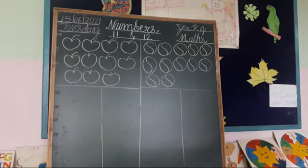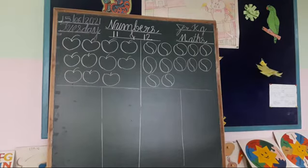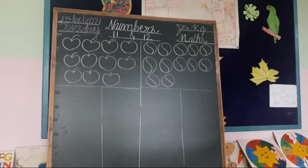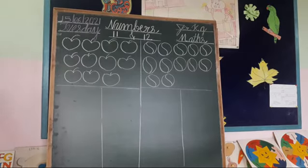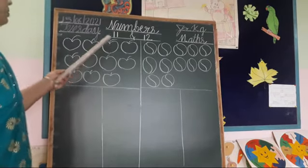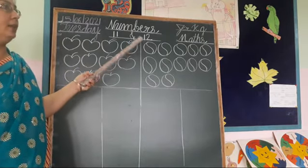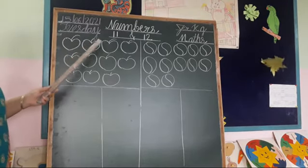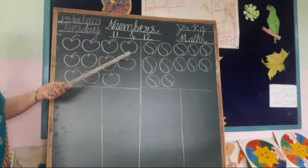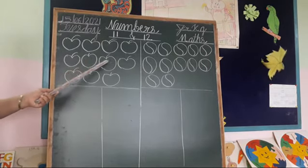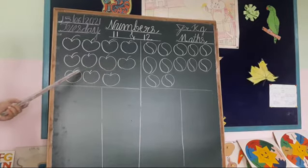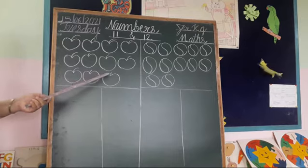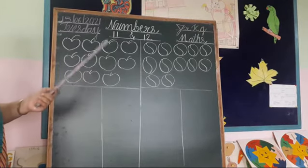First we have 1 to 10 numbers. Now we have children 11 and 12. So now look at the blackboard. First, counting. Look at here: 11 and 12. So now first count apples. 1, 2, 3, 4, 5, 6, 7, 8, 9, 10, 11. How many apples are here? 11.